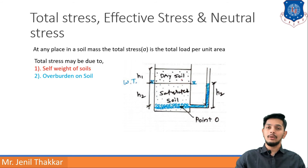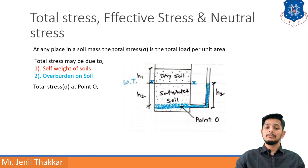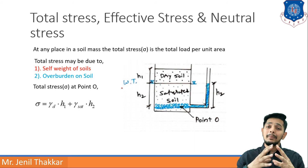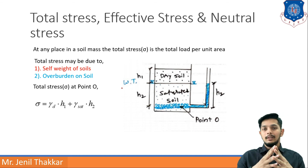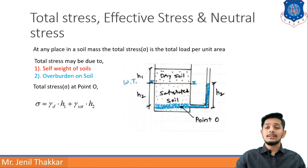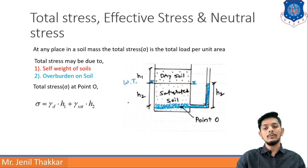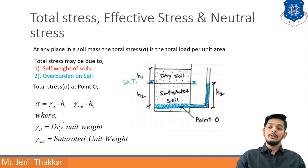The upper portion is dry soil and the lower portion is saturated soil due to the groundwater table. Calculating stress at point O: total stress equals gamma_d times h1 plus gamma_sat times h2. Gamma_d is the unit weight of dry soil times its height h1, and gamma_sat is the unit weight of saturated soil times its height h2.